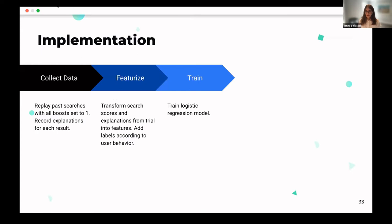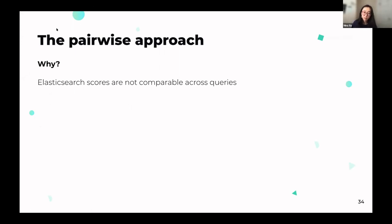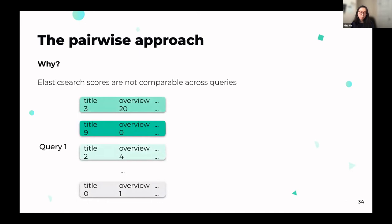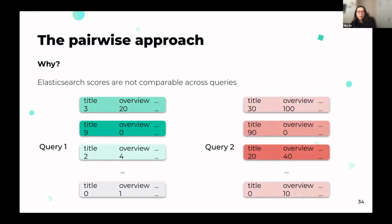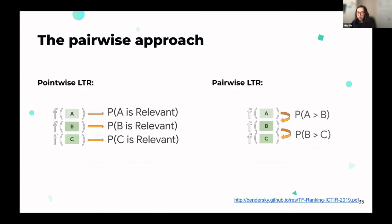Now that we have training data ready, it's time to fit a logistic regression model. We're taking a pairwise approach. Why? As mentioned, Elasticsearch scores are not comparable across queries — one query might give scores around 293 while another gives scores on a totally different scale. So for one query a total score of nine might correspond to a relevant result, but not for another query. The pairwise approach for Learning to Boost is inspired by pairwise Learning to Rank — same basic ideas but different implementation.